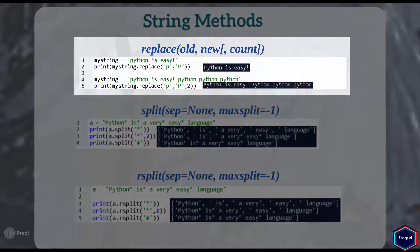The replace method returns a copy of the original string in which contents of the original string are replaced by another substring. It takes three arguments: 'old', which is the substring you want to replace; 'new', that is the substring you want to put in place instead; and the optional argument 'count'. If the count argument is given, only the first count occurrences are replaced. In this example I replaced the alphabet 'p' with capital 'P', and in my next example I set count to 2 so it replaces only the first two 'p's with capital 'P'.